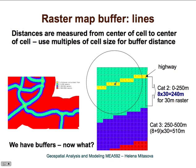We can use different types of distance measurement. If we are using Euclidean distance, then the buffer is created by drawing a circle around each grid cell center, and all of the cells whose center falls within this circle will belong to this buffer.